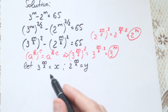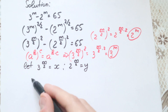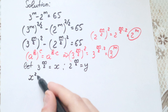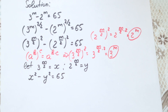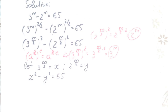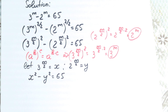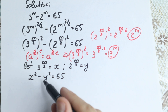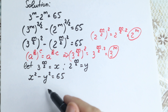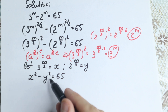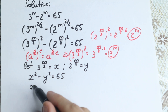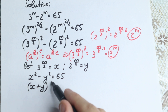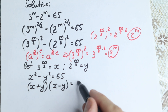We express 3 to the power m over 2 as x and 2 to the power m over 2 as y. So we have x squared minus y squared equal to 65. This is our identity formula — a squared minus b squared. We can write it as x plus y times x minus y equal to 65.